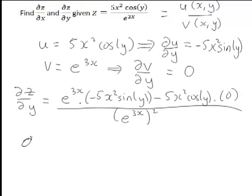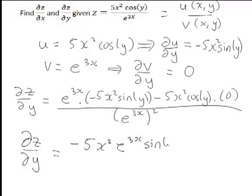So the partial derivative of z with respect to y equals negative 5x squared·e to the 3x·sine(y) divided by e to the 6x, since the last term multiplied by zero disappears. That's an example of partial differentiation applying the quotient rule.